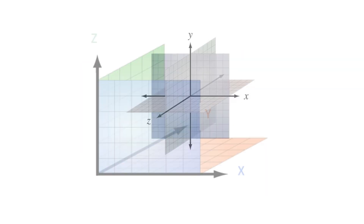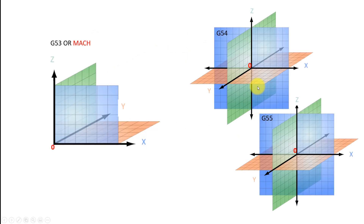The G54 coordinate system is inside the machine coordinate system called G53. The zero position is normally in the center, or it could be at other locations. From there, as an example, G01 X5 would move 5mm in the positive X direction, or G01 X-5 would move back. This is equal for all three axes — X, Y, and Z.